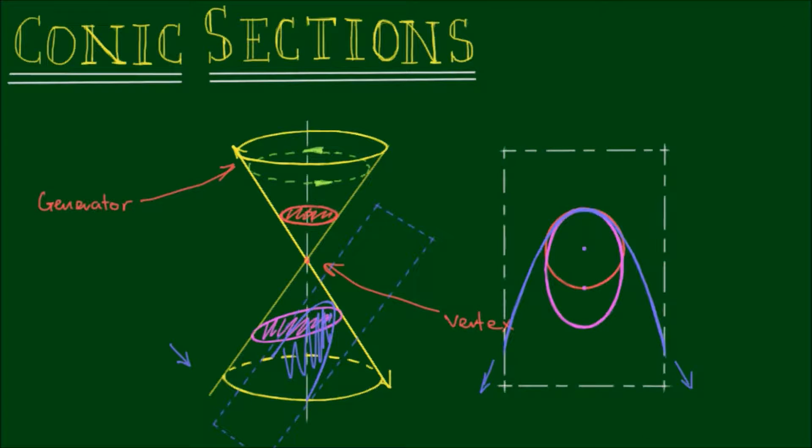And finally, if we cut these cones with a plane that is even more tilted, such that the angle between the plane and the axis is less than the angle that is formed between the axis and the generator—in this case, shown by the cyan plane as being vertical—at the intersection of this cyan plane and the cones will be a set of hyperbolas.